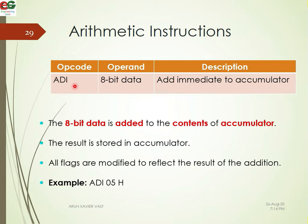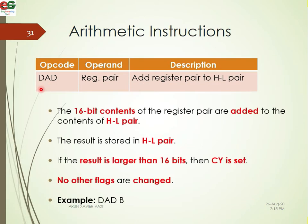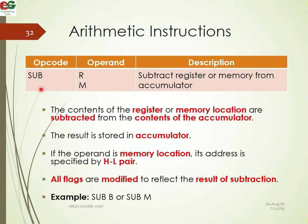ADI is add immediate — for example, ADI 05 adds the immediate number 05 to the accumulator. ACI is add immediate with carry — for example, ACI 45 adds the immediate data 45h plus the carry flag to the accumulator. The result is stored in the accumulator.